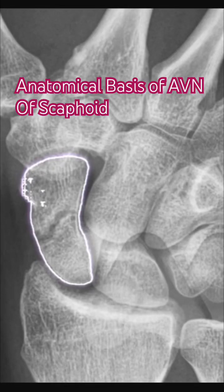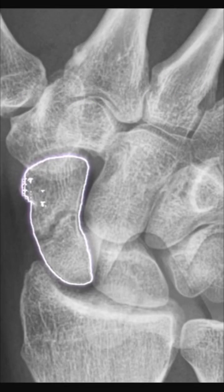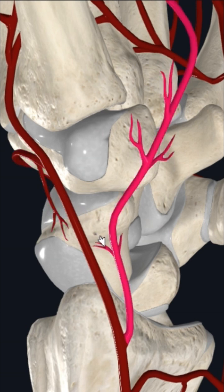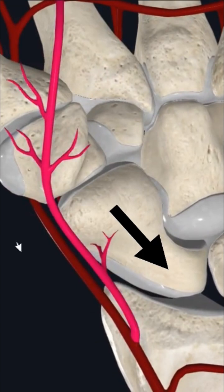Hello students. As you know, the scaphoid is the most commonly fractured carpal bone, and its fracture leads to avascular necrosis of the proximal segment. When you look at the blood supply of the scaphoid bone, you realize that the proximal segment does not receive any direct blood vessels. The blood vessels enter at the distal end of the bone, and there is a reverse directional blood flow — that is, from the distal end to the proximal end.